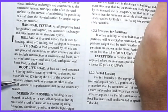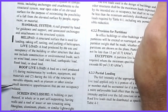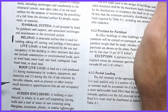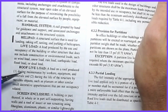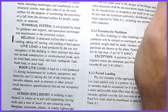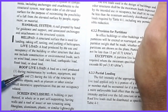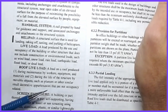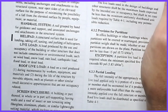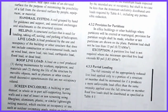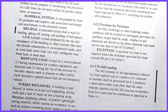The roof live load is defined as loads during maintenance by workers, equipment, and materials, and also accounts for loads during the life of the structure by movable objects such as planters or small decorative appurtenances that are not occupancy related. I would include things like broken tree limbs in this category. The keywords are 'not occupancy related.'